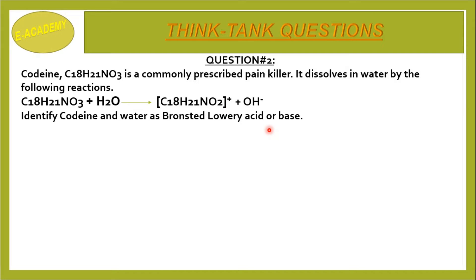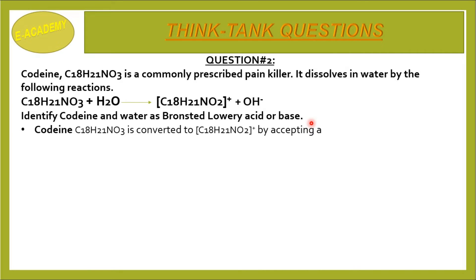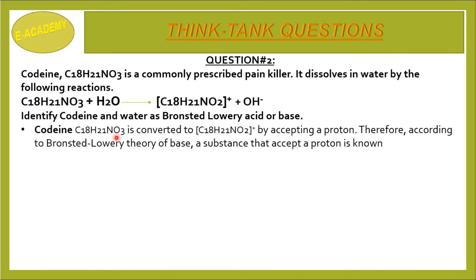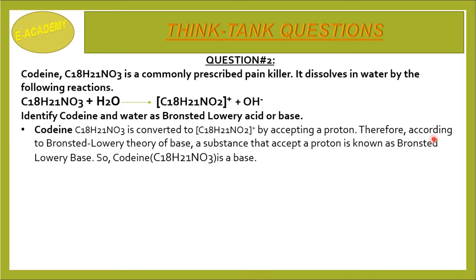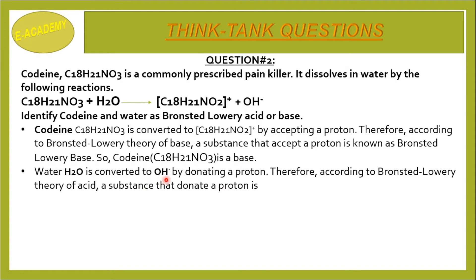We need to identify codeine and water as Bronsted-Lowry acid or base. Codeine, C18H21NO3, is converted to C18H21NO3+ by accepting a proton. Therefore, according to Bronsted-Lowry theory, a substance that accepts a proton is known as a Bronsted-Lowry base, so codeine is a base. Water H2O is converted to OH- by donating a proton. Therefore, according to Bronsted-Lowry theory, a substance that donates a proton is known as a Bronsted-Lowry acid, so H2O is an acid.